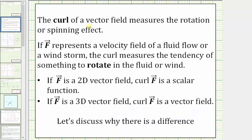The curl of a vector field measures the rotation or spinning effect. If the vector field f represents a velocity field of a fluid flow or windstorm, the curl measures the tendency of something to rotate in the fluid or wind.